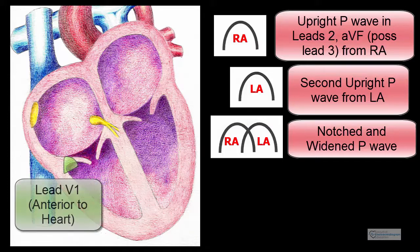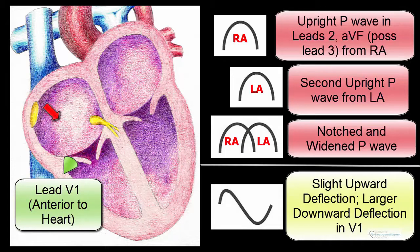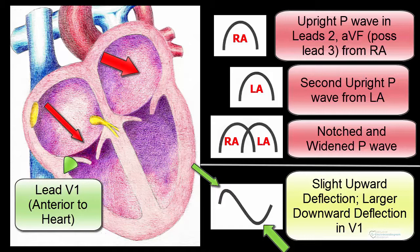If we view this from lead V1, which is anterior to the heart, we typically see an upright deflection first as the right atrial impulse goes towards the electrode, followed by a second downward deflection as the impulse now goes through the left atrium in a direction away from and to the left of the electrode.